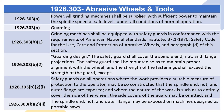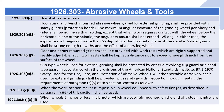1926.303(b)(2) Guarding Design: The safety guard shall cover the spindle end, nut, and flange projections. The safety guard shall be mounted so as to maintain proper alignment with the wheel, and the strength of fastenings shall exceed the strength of the guard, except: 1926.303(b)(2)(i): Safety guards on all operations where the work provides a suitable measure of protection to the operator may be constructed so that the spindle end, nut, and outer flange are exposed; and where the nature of the work entirely covers the side of the wheel, side covers may be omitted.